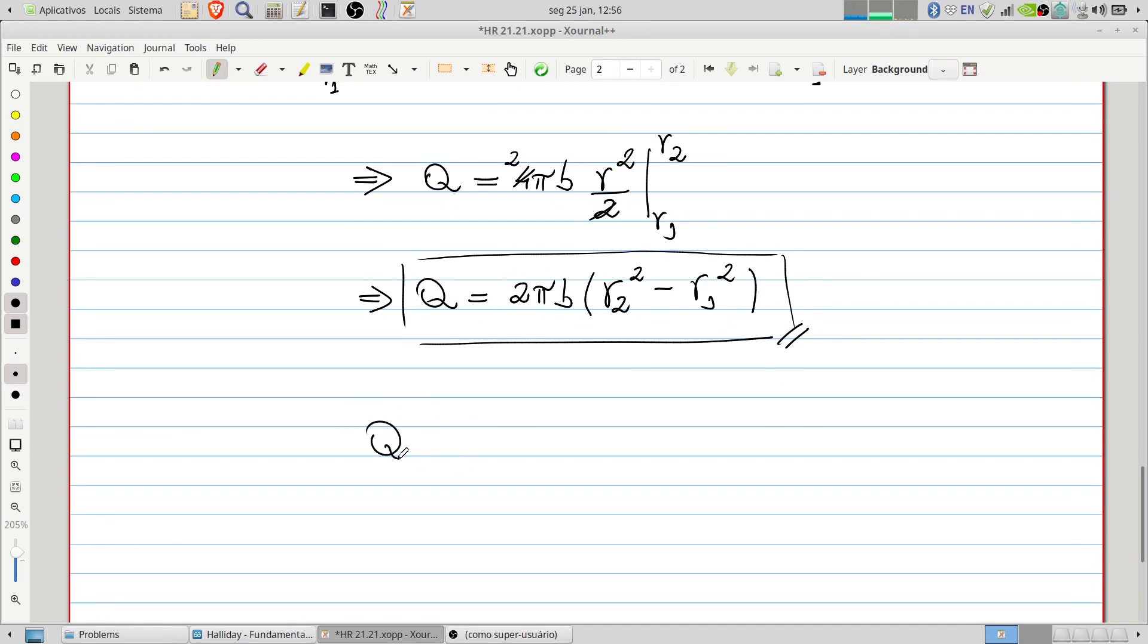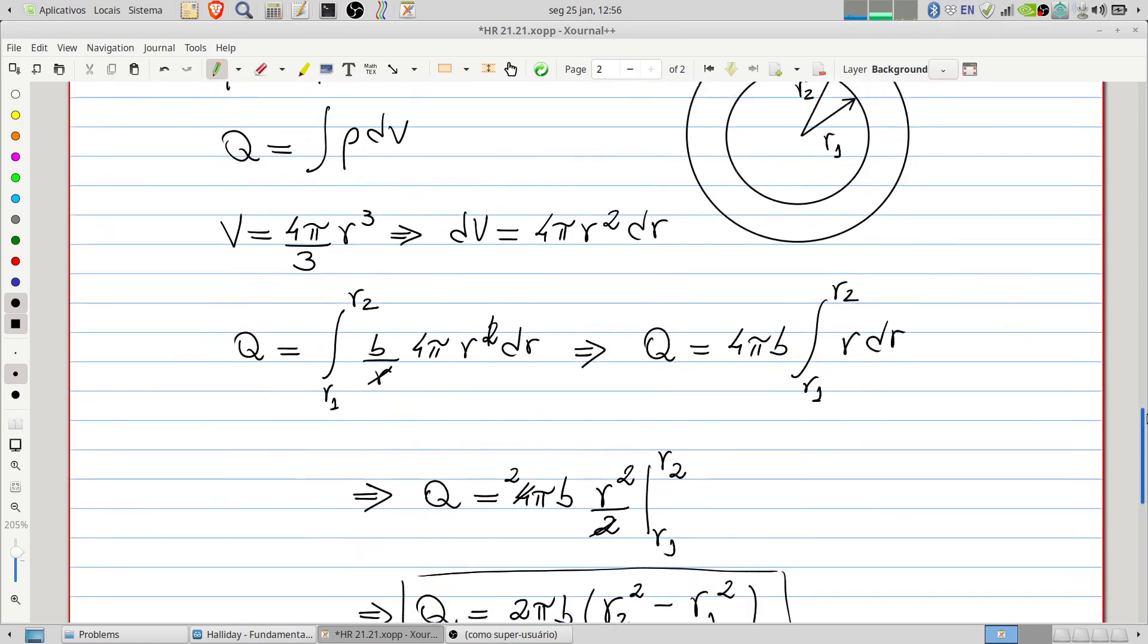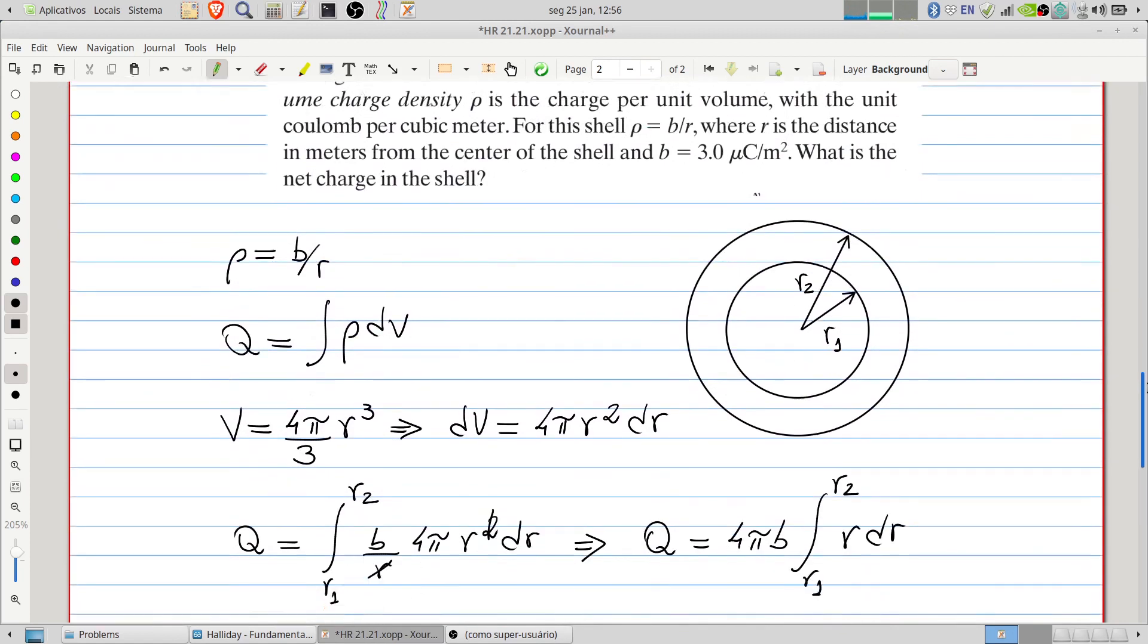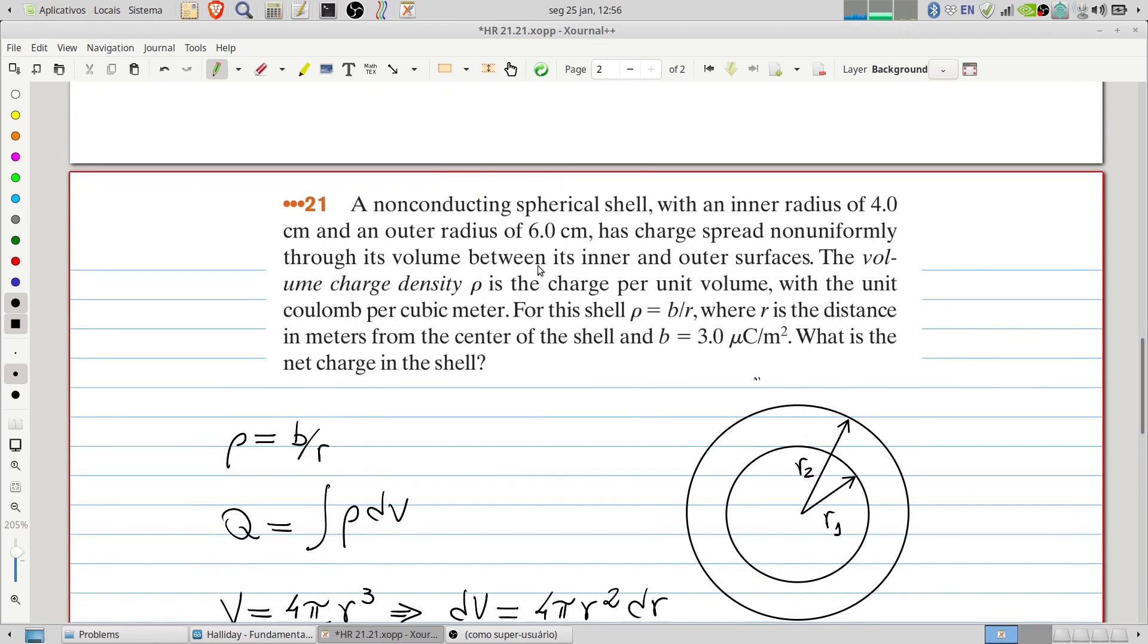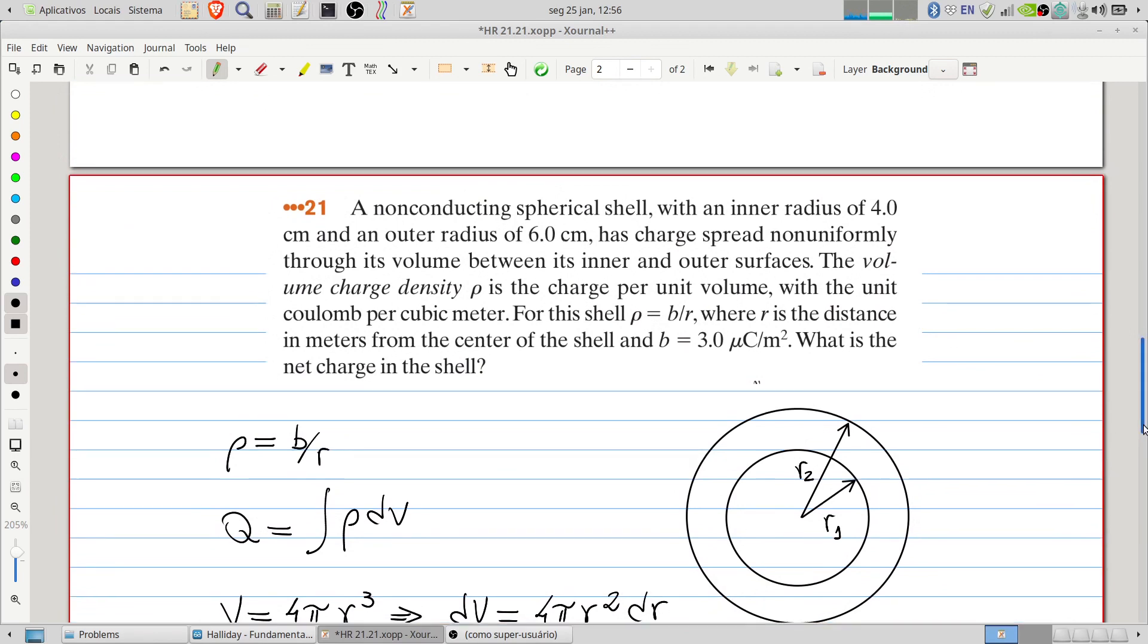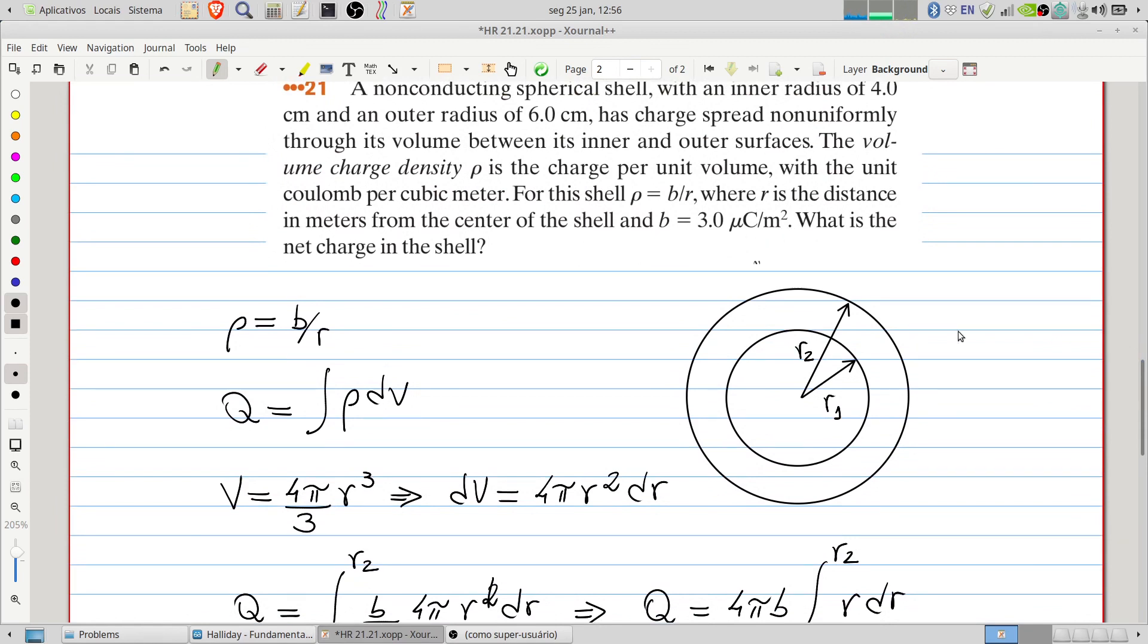Using our numerical values, we can write 2π times b, b is 3 microcoulombs per meter. And here we have r2 the outer radius, 6 centimeters, we are using here meters,